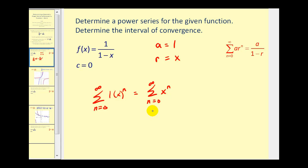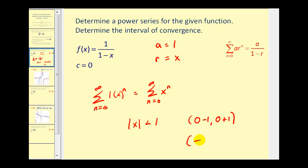To determine the interval of convergence, remember that the absolute value of r must be less than one. This series converges as long as the absolute value of x is less than one. Since this power series is centered at x equals zero, the interval of convergence will be zero minus one to zero plus one — the open interval from negative one to positive one.